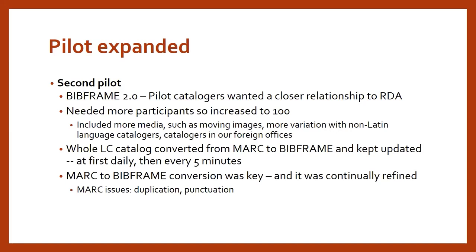After a couple of years, we ended the first pilot. We took stock and then began an enhanced pilot incorporating what we had learned from catalogers, programmers, and about the new technology. Pilot 2 uses the BibFrame 2.0 ontology, a revision of 1.0 to make it closer in relationship to RDA. To include all the diversity of resources, the number of pilot participants was increased to 100. The entire Library of Congress catalog was converted to BibFrame and made available to catalogers.